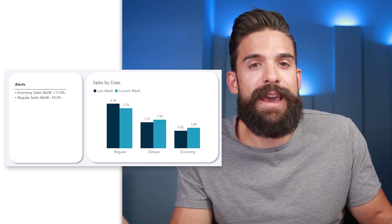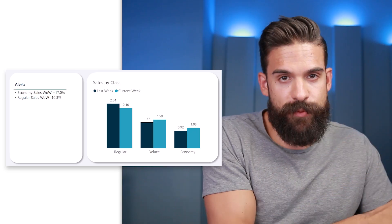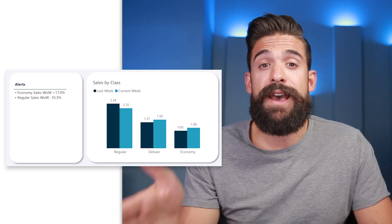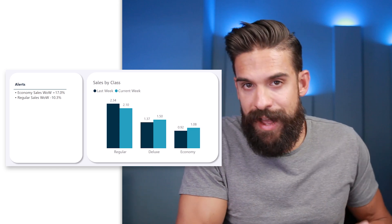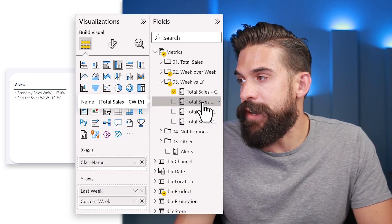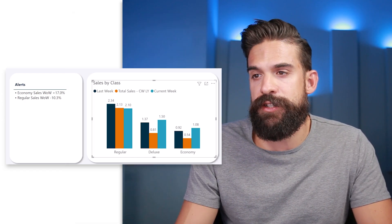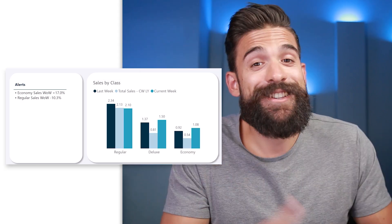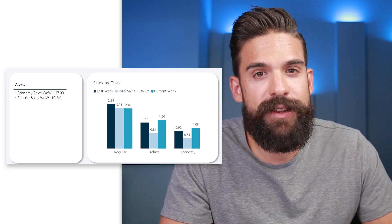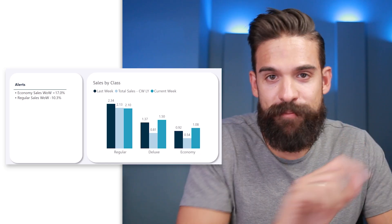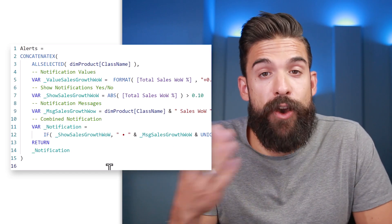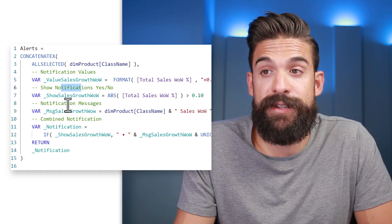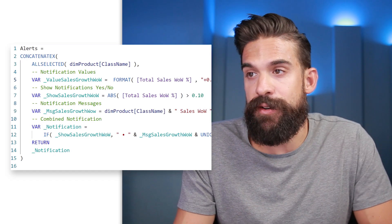Now we have it working for our first KPI — the performance of current week sales versus last week sales. But what if we want to add another measure, another KPI to check the development for? For example, we could look at current week sales versus the same week last year. I'll take the measure for 'total sales current week last year' and add it to the chart. Then let's go back to our alert measure and integrate it there too.